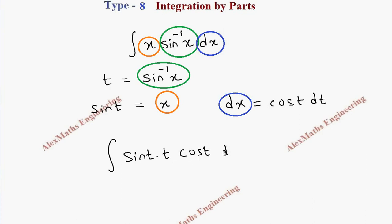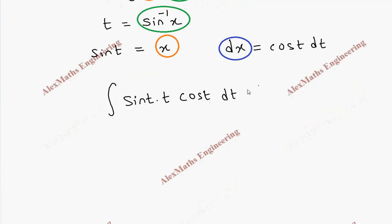Now we will keep the t separate and the remaining sine t into cos t dt. Let's multiply by 2 and divide by 2.